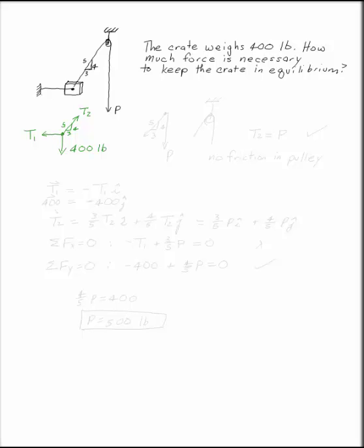The thing about a pulley, if you were to draw the free body diagram of the pulley, you have the 3, 4, 5 right triangle and the pulley coming down, P.